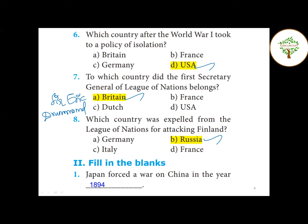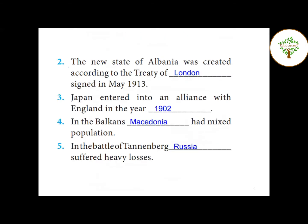Next Roman: Fill in the blanks. First question — Japan forced a war on China in the year 1894. Question number two — the new state of Albania was created according to the Treaty of London signed in May 1913. Question number three — Japan entered into an alliance with England in the year 1902.